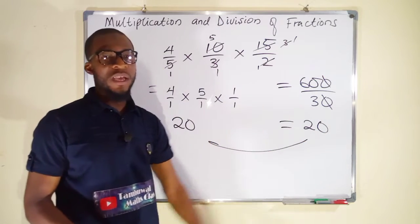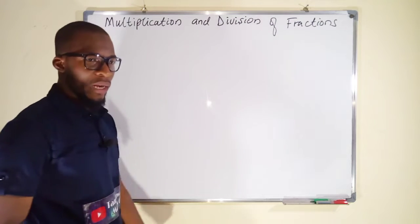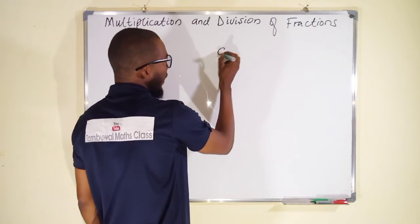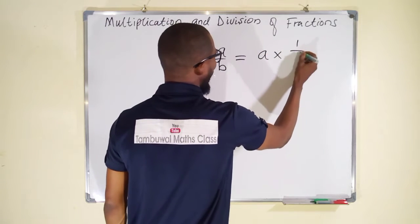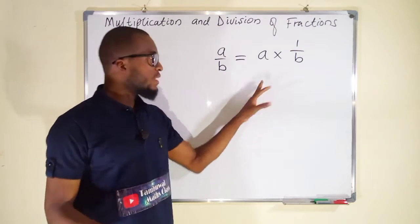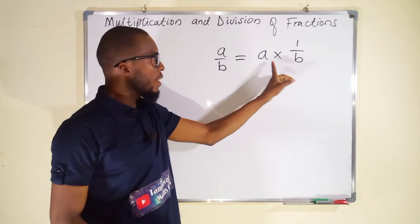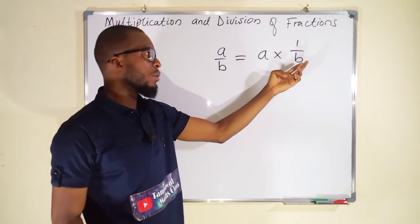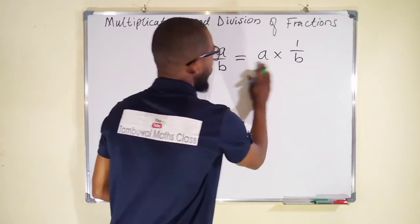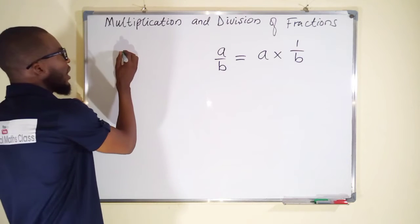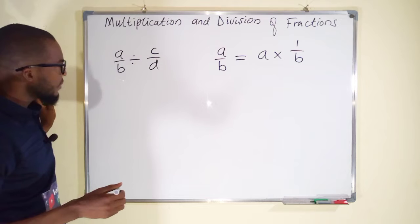Now let us look at division. Note that A divided by B is the same as A multiplied by 1 over B. If you have a whole number — any integer — multiplying a fraction, that integer multiplies the numerator, not the denominator. So A times 1 is A, and we rationalize the denominator: 1 times B is B. Keep this principle in mind.